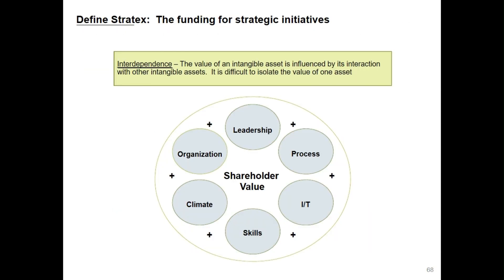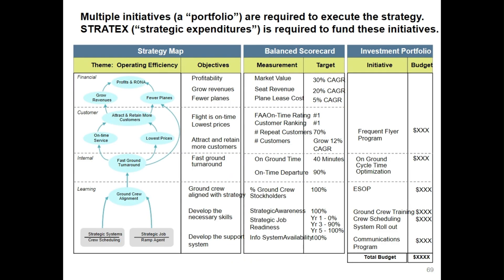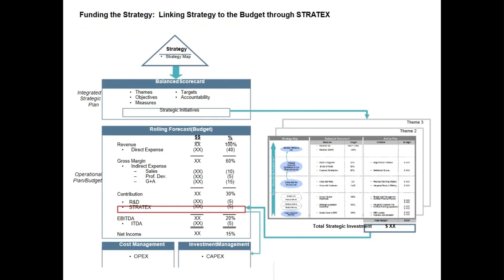Strategic expenditure is the funding for strategic initiatives. The value of an intangible asset is influenced by its interaction with other intangible assets, making it difficult to isolate the value of one asset. The budget is defined against each initiative, and the funding for each initiative needs to be allocated in the budgets. Linking strategy to the budget through StratEx: we can see operational budgets, capital budgets, and StratEx and how this is included in the budget — this is a very important concept of the budgeting process.